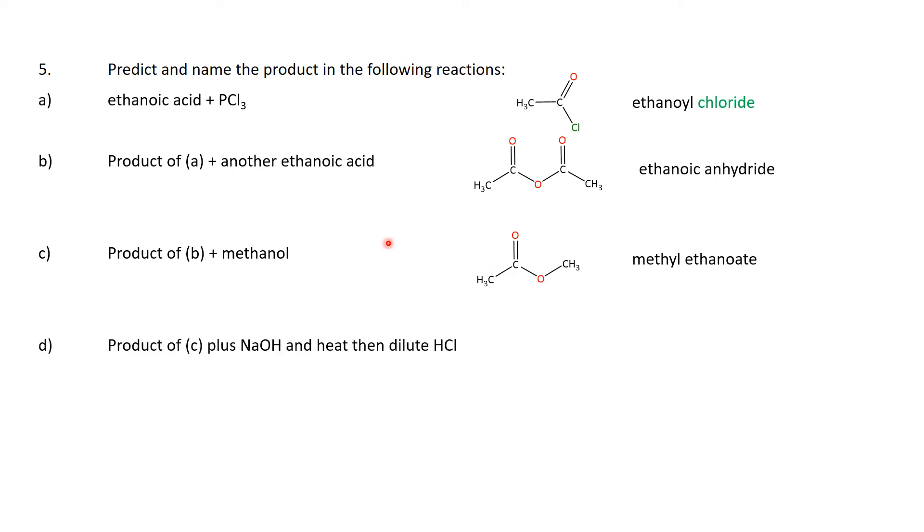And finally we take an ester plus sodium hydroxide and heat, so we're going to base catalyzed hydrolysis of it. That would give us first of all the conjugate base of an acid, and then we use dilute HCl to turn it into the acid. So when we're going to break this up, we will just make ourselves ethanoic acid.